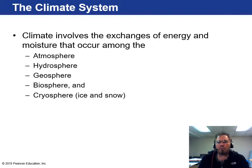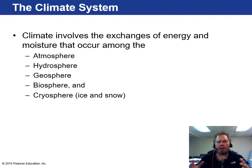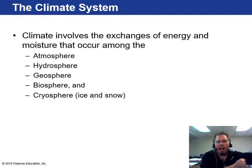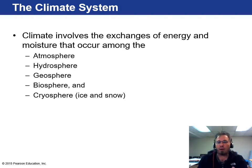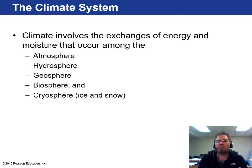Climate involves a large amount of energy and moisture that interacts between the different spheres we talked about in Chapter 1. The atmosphere is where the air and clouds are. The hydrosphere is the water — groundwater, lakes, rivers, oceans. The geosphere is geology, the rocks. The biosphere is all the living organisms on Earth — trees, plants, humans, animals. And then the cryosphere, which is water in solid form like ice or snow, which plays a large role as well.